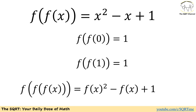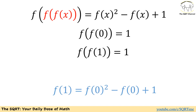If we apply f to both sides, on the left hand side we have f of f of x, and on the right hand side, instead of x we need to have f of x. So we will have f of x to the power of 2 minus f of x plus 1. Now we have two interesting things to try.